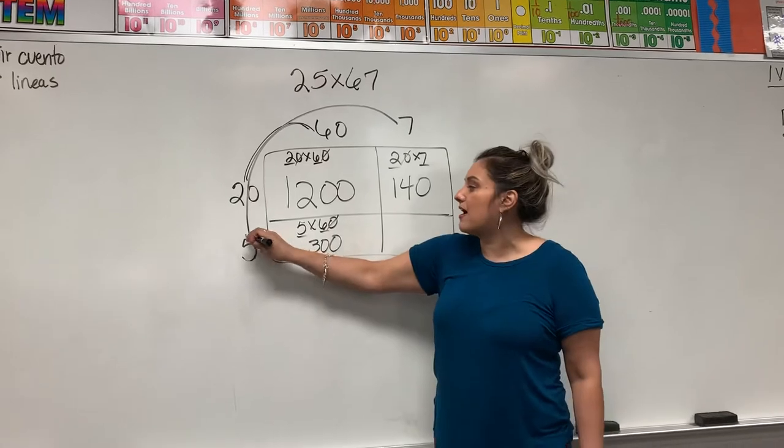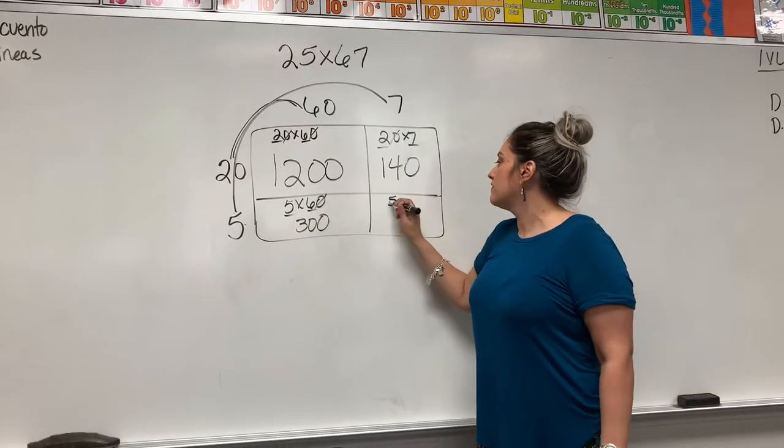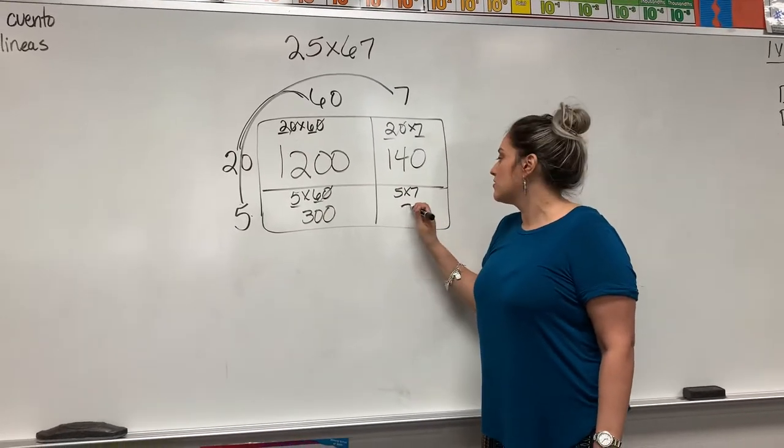And the last quadrant here is for 5 times 7. 5 times 7. 5 times 7 is 35.